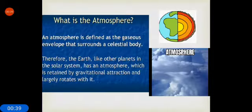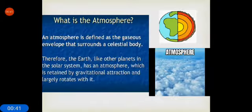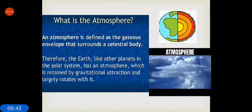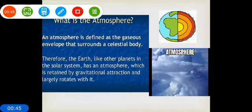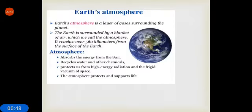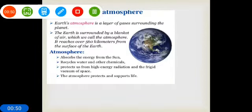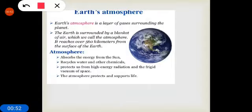Therefore, the earth like other planets in the solar system has an atmosphere which is retained by gravitational attraction and largely rotates with it. Earth's atmosphere is a layer of gases surrounding the planet. The earth is surrounded by a blanket of air which we call atmosphere. It reaches over 560 kilometers from the surface of the earth.